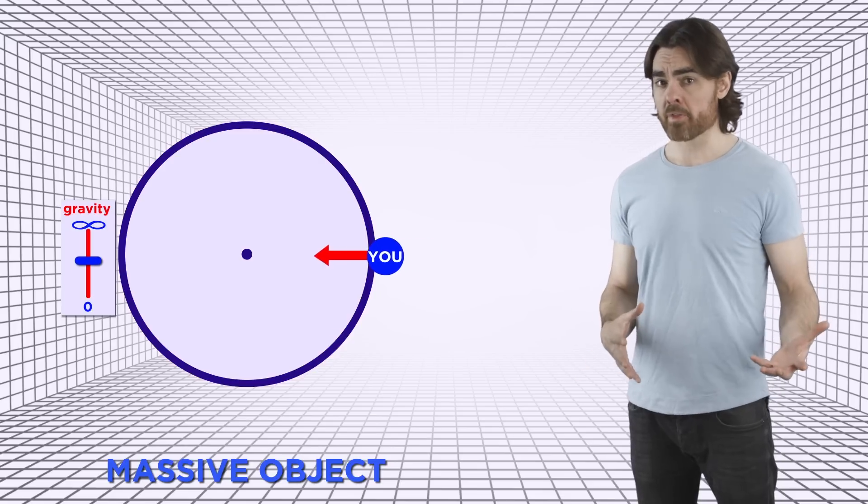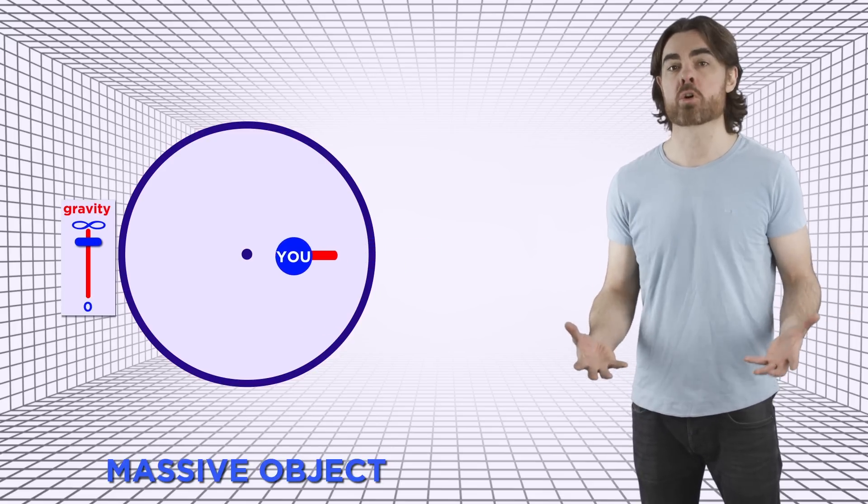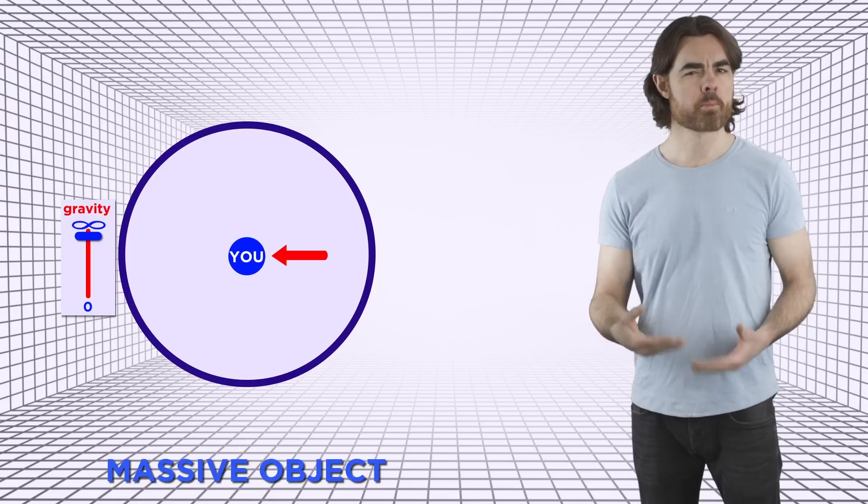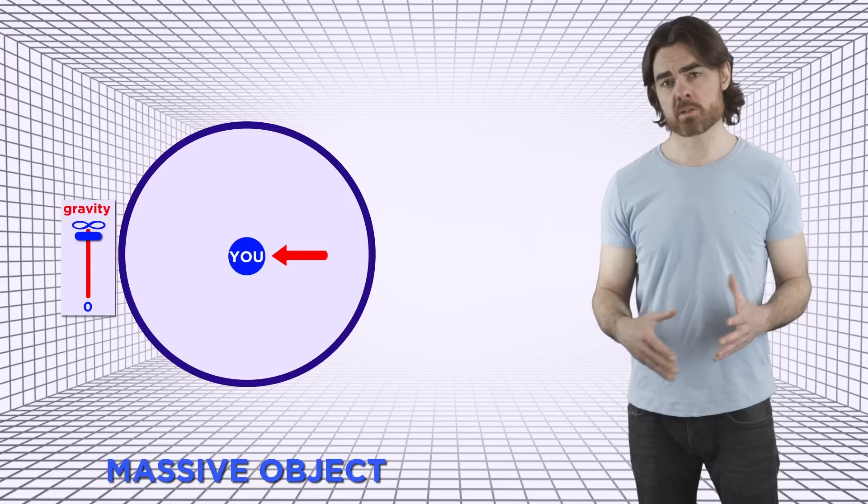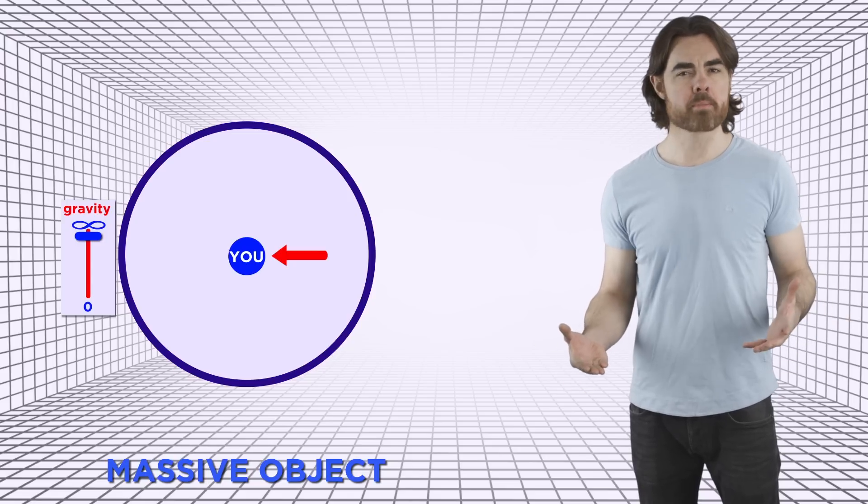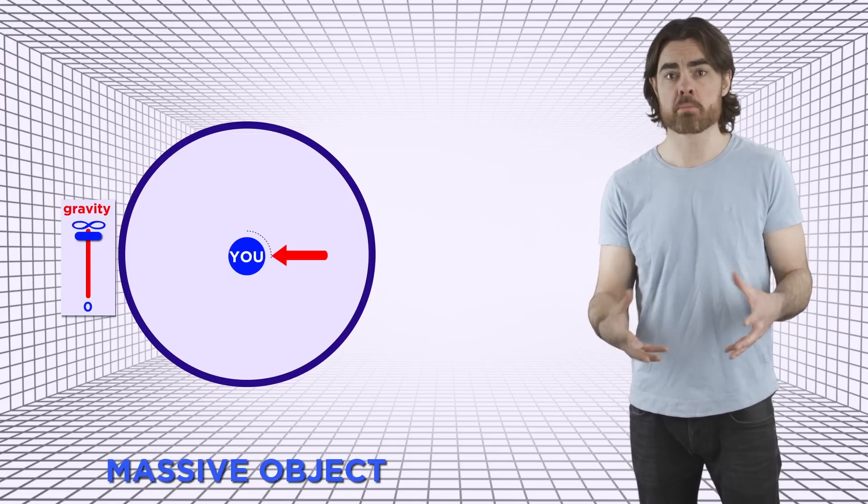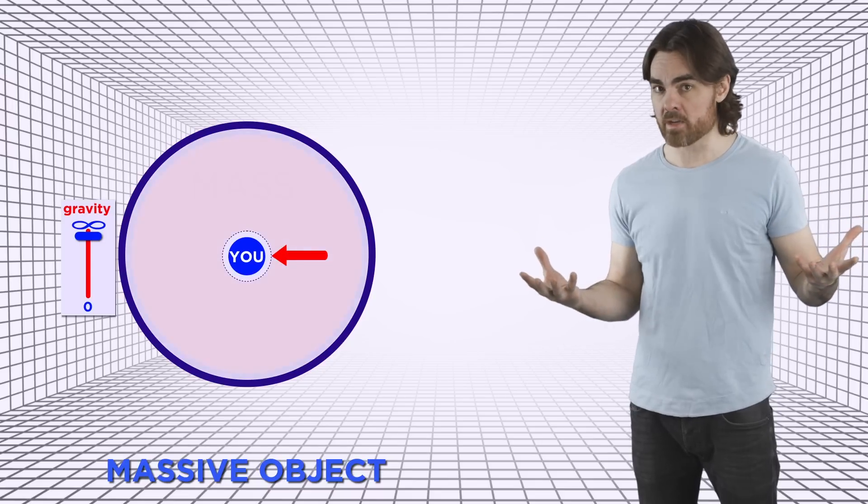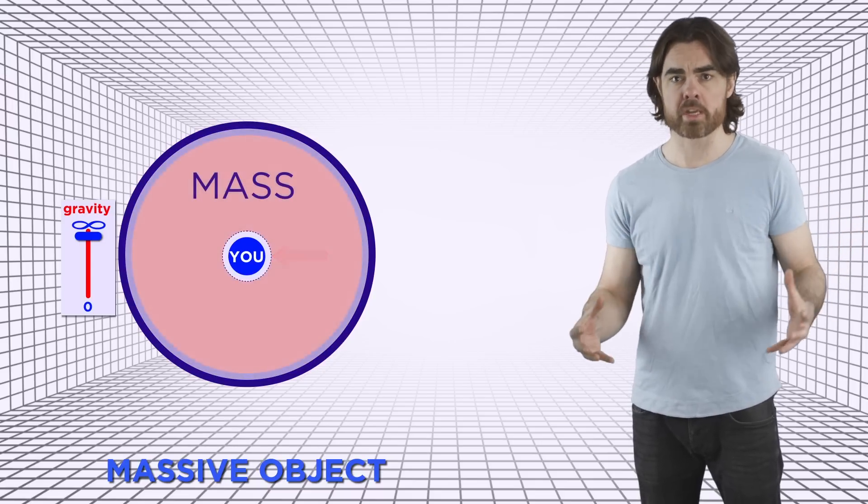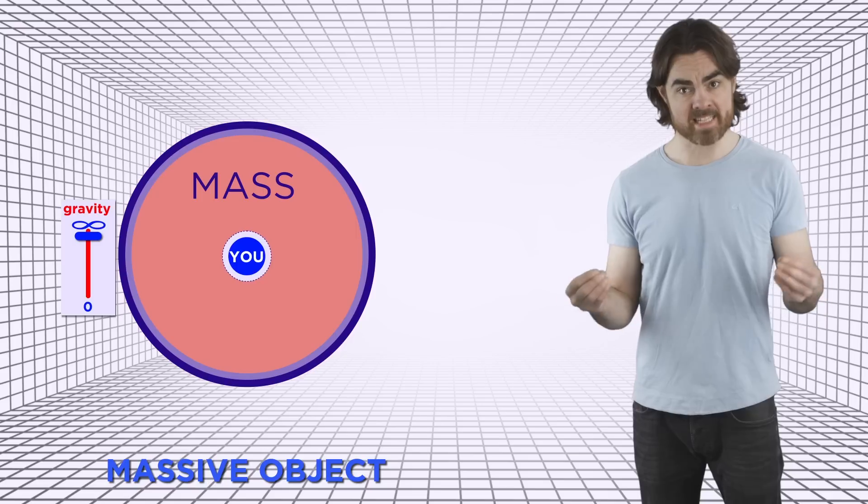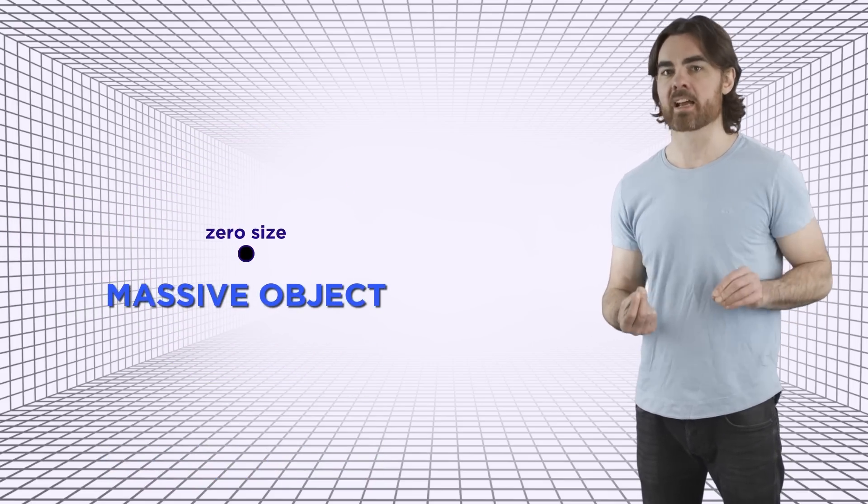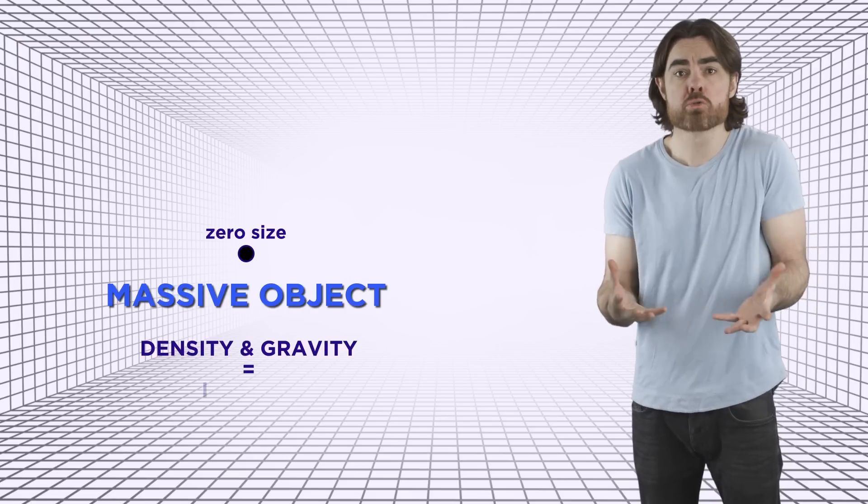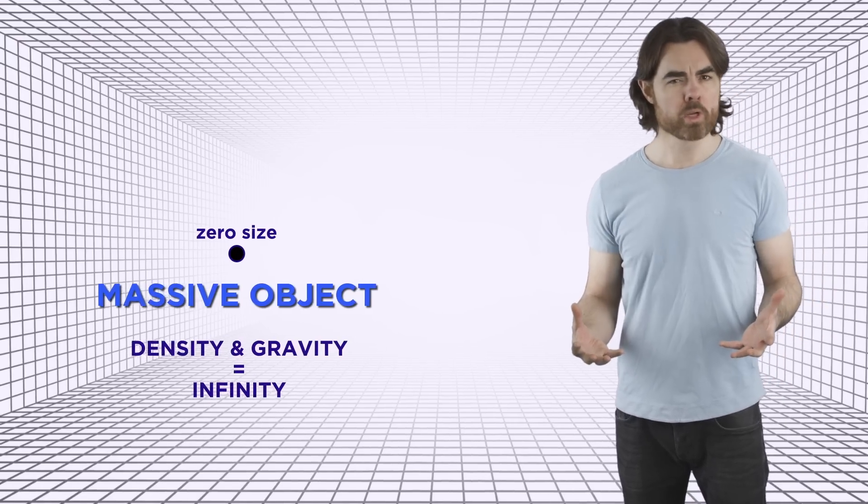From the math, you'd expect the gravitational force to become infinitely strong at zero distance. But that's zero distance to the center of mass of an object. For most things, planets, stars, etc., that means you're inside the object and most of the mass is above your head, no longer contributing to gravity. But what if the massive object itself has zero size? That's the singularity of the black hole, where density and gravity do go to infinity.